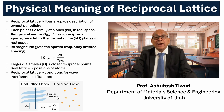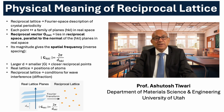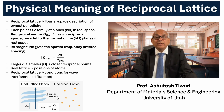Now let us look at what the reciprocal lattice means in physical terms. The real lattice represents the actual periodic arrangement of atoms, defined by the basis vectors A, B, and C. The reciprocal lattice, on the other hand, exists in Fourier space. It describes how that periodic structure repeats in terms of spatial frequency rather than distance. Each point in reciprocal space corresponds to a particular family of planes labeled by indices h, k, and l in real space.